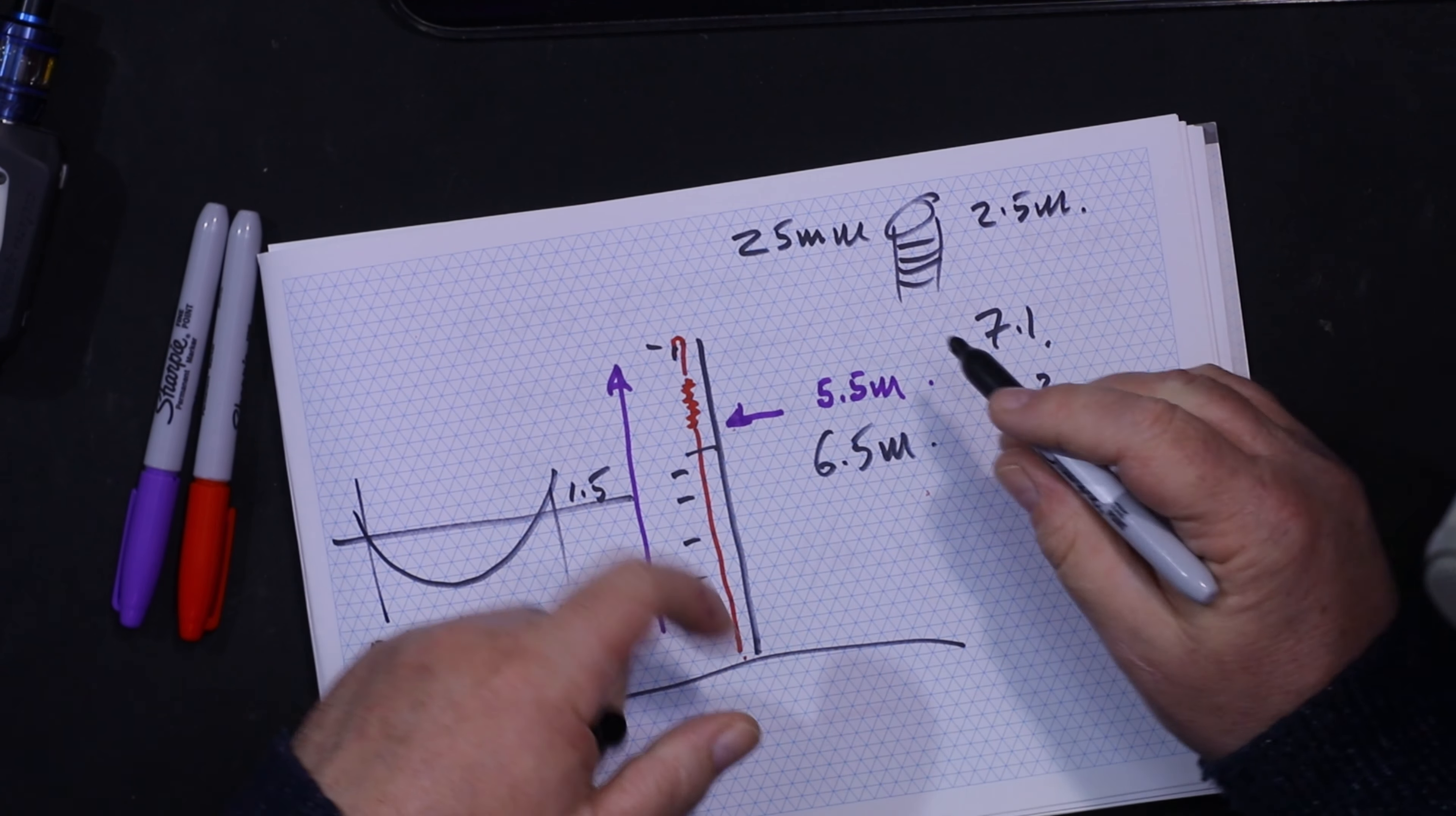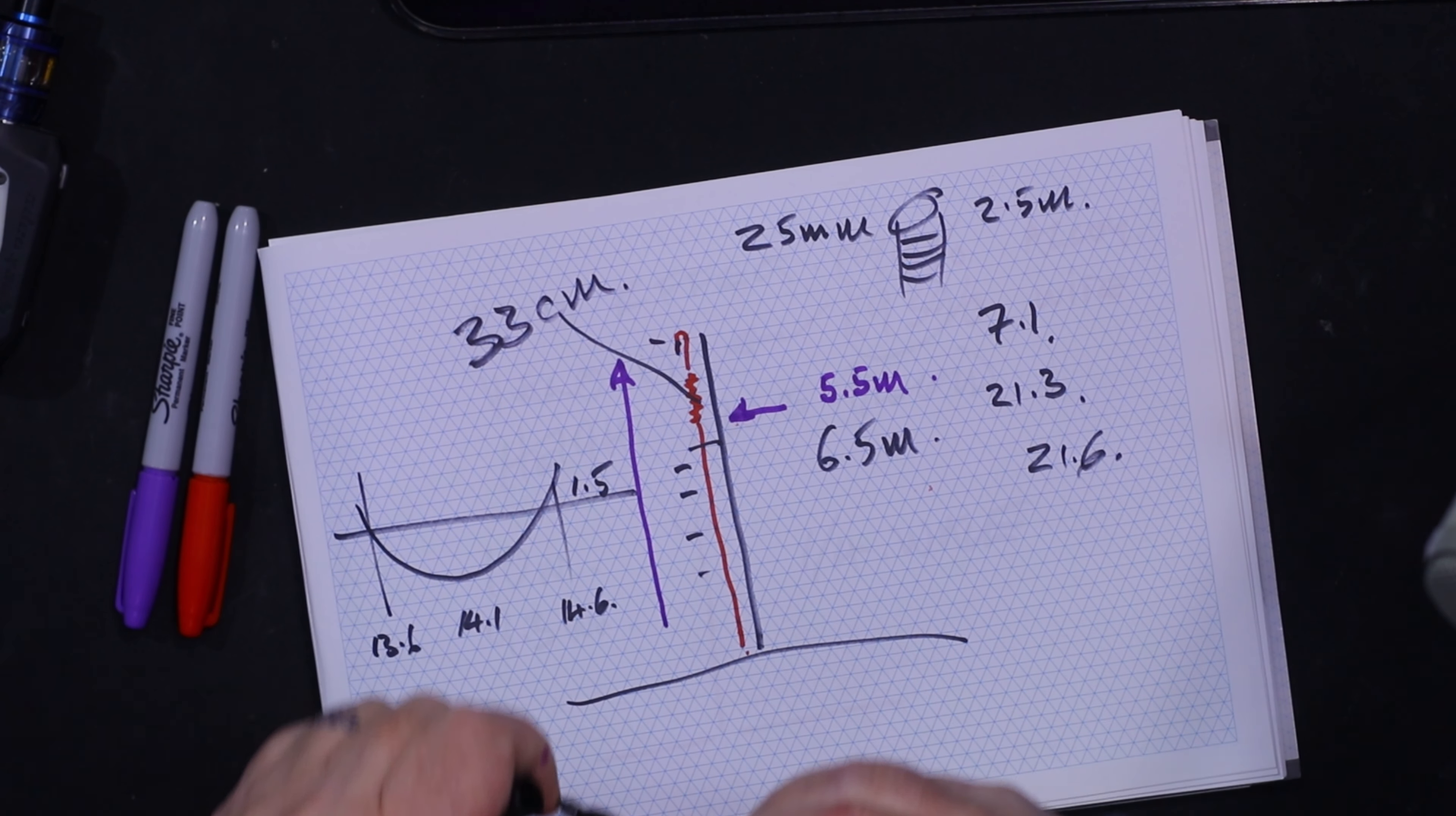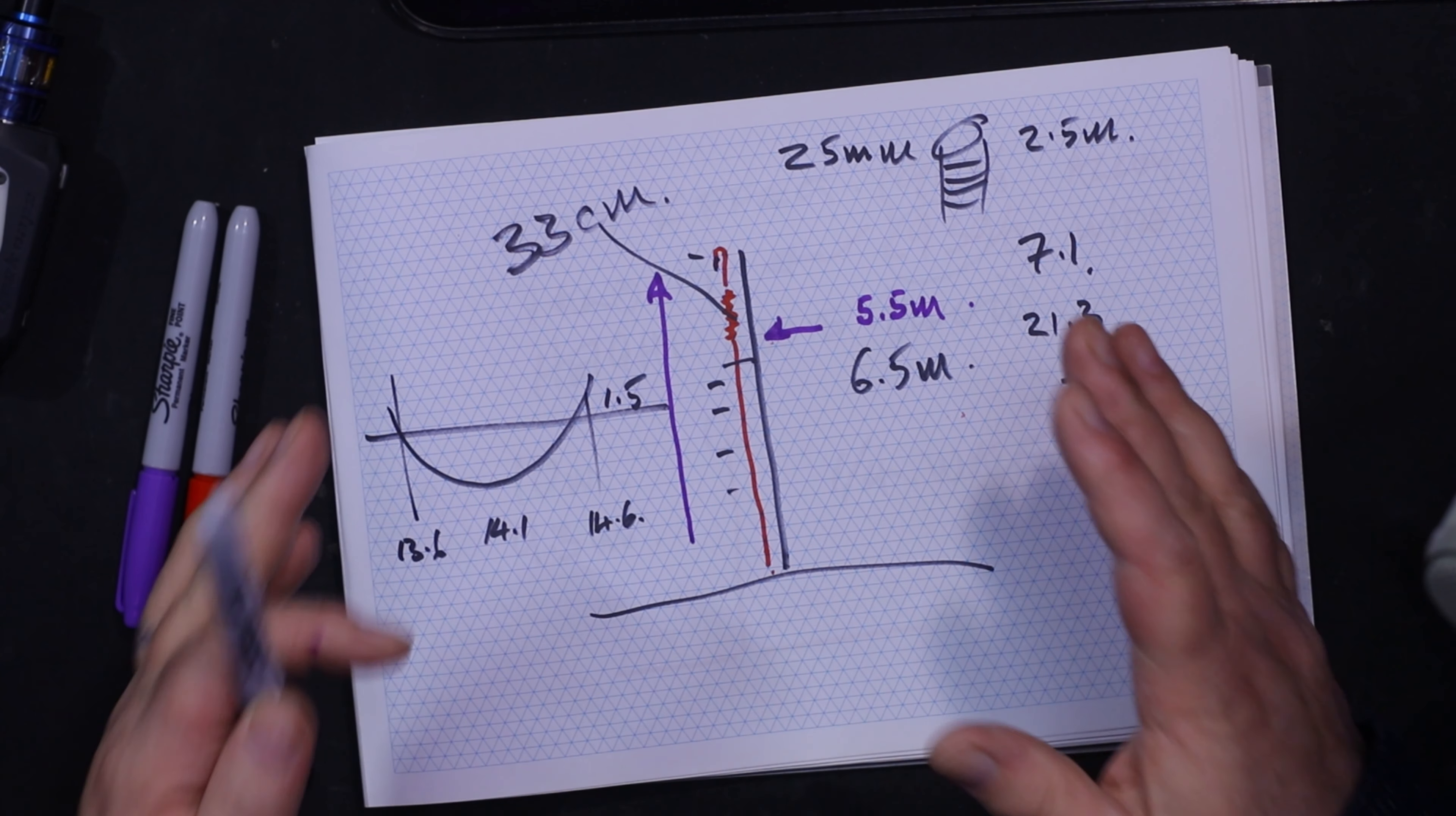You can work it out: 135 divided by 4 equals 33, so the length of the coil is 33 centimeters—about 13, 14 inches.